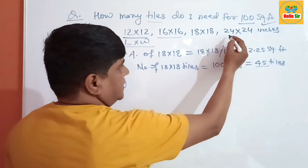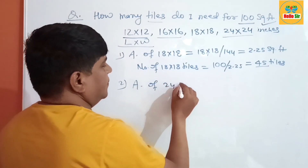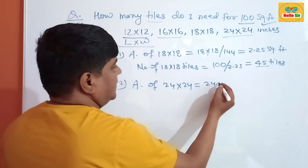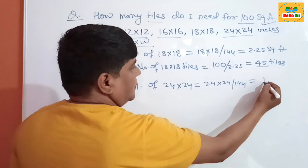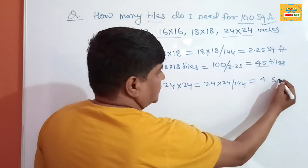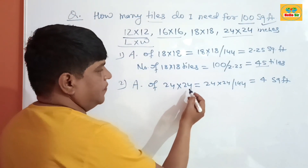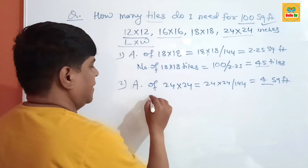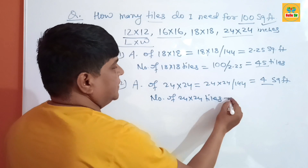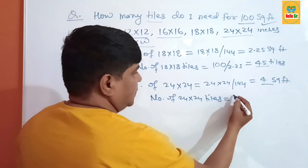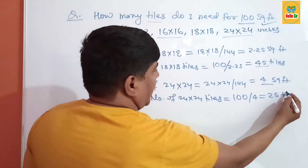Now the last one: if your tile size is 24 by 24 inches, multiply 24 by 24 and divide by 144. This gives 4 square feet — meaning one tile of 24 by 24 inches covers 4 square feet of area. Now calculate the number of 24 by 24 tiles needed to cover 100 square feet: simply divide 100 by 4, which gives 25 tiles.